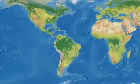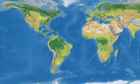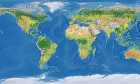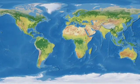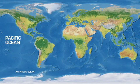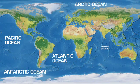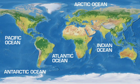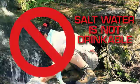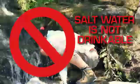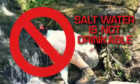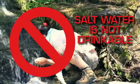On Earth, we have oceans. An ocean is a large body of salt water. There are only five oceans around the entire world, and salt water is not drinkable.